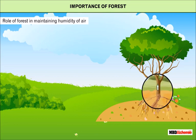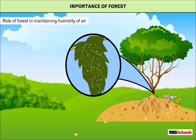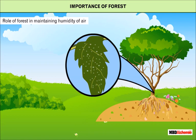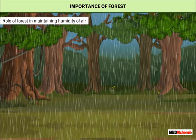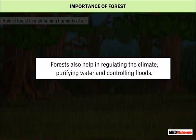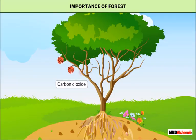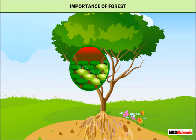The roots of trees absorb water from the soil, and the leaves release water vapor into the air through evaporation and transpiration. These water droplets mix with the air, helping forests maintain humidity. This also helps in cloud formation and ultimately causes rain. Forests also help in regulating the climate, purifying water, and controlling floods.